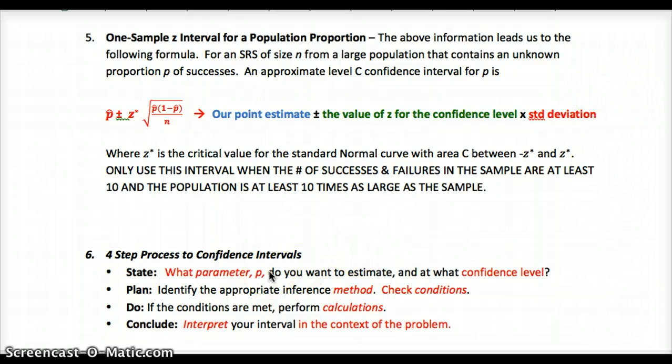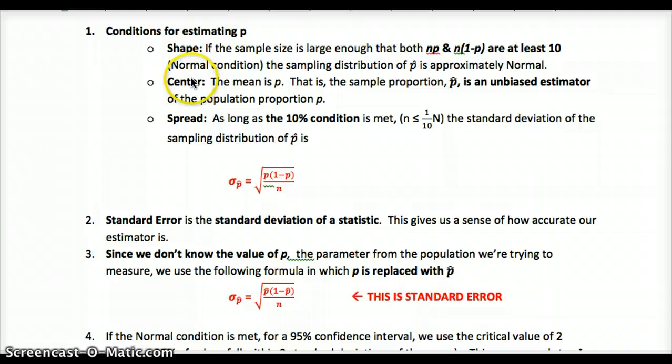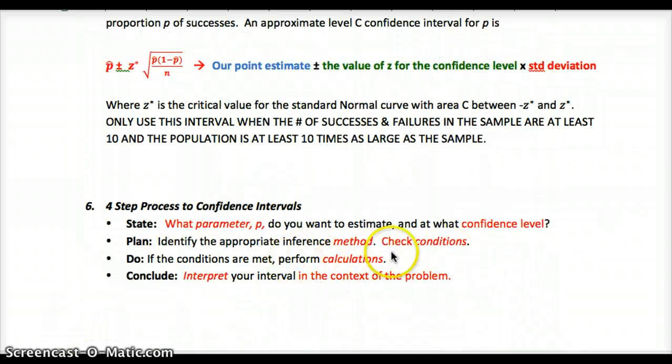That brings us to solving these problems. State, plan, do, conclude, just like we've done all year. State: what parameter p are you trying to estimate, and the confidence level. Everything in red is the two key parts you need to conclude, identifying the parameter you want and the confidence level. Plan: identify your method, what are you going to do, and then check your conditions. Remember the conditions from above for shape, center, and spread. Shape being the normal condition, center being the unbiased estimator meaning random assignment and random sampling, and spread being the 10% condition. This condition is the same for sample means, while shape changes to the central limit theorem. In the do step, you perform any calculations.